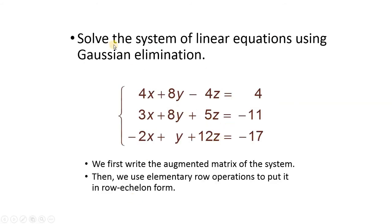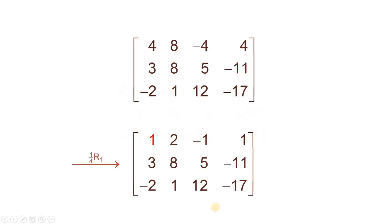Now this is another question: solve the system of linear equations using Gaussian elimination method. These are 3 non-homogeneous equations. We first write the augmented matrix of the system, then we use elementary row operations to put it in row echelon form. This is our augmented matrix — we must create 1 here. By using 1 over 4 times R1, this 4 will become 1, this 8 over 4 will become 2, minus 4 divided by 4 is equal to minus 1, and 4 over 4 is equal to 1. Now this is our leading entry.